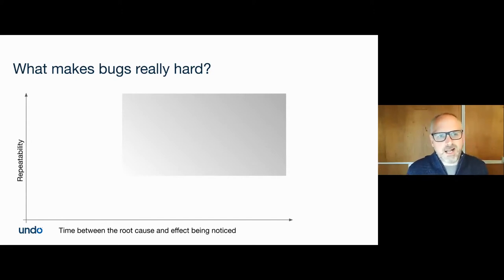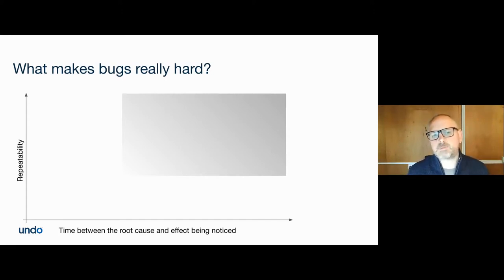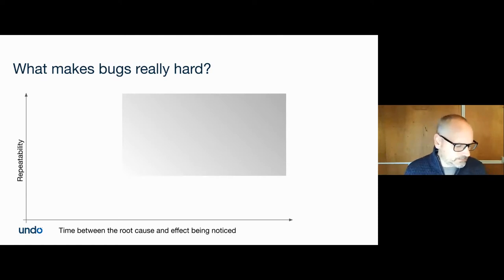We'd love to fix every single known bug and test failure but we just don't have time. Especially those tests that fail occasionally and non-deterministically — we exclude them, put them in quarantine, or ignore the results. We always think we'll fix it next week because this week is really busy, and of course next week never is as easy as you think it's going to be.